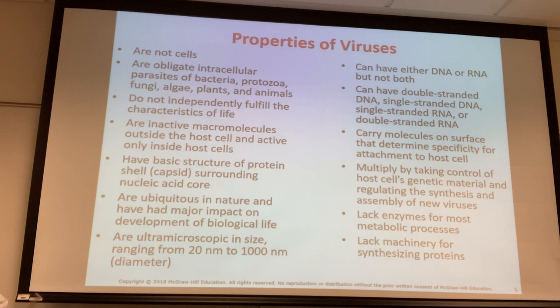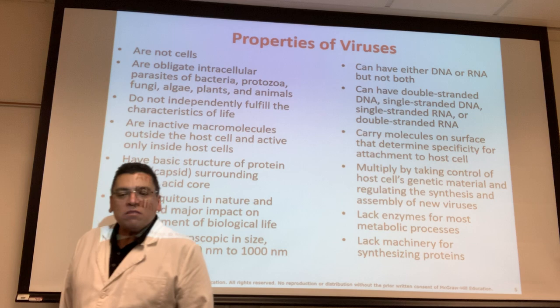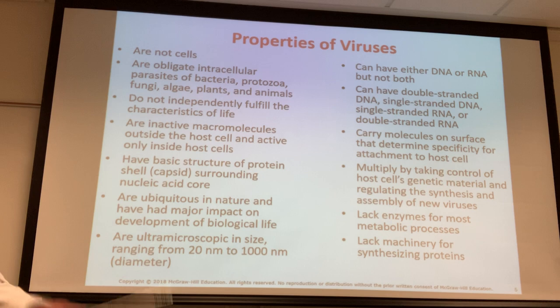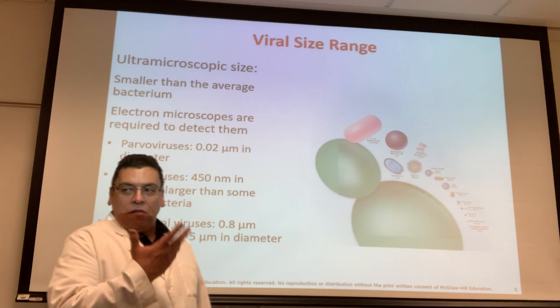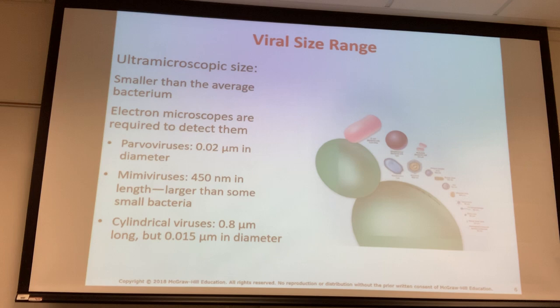We already talked about them being obligate intracellular parasites — they activate within your cells, make copies of themselves, and those copies leave to infect other cells. Acellular means not made up of cells, like viruses. Unicellular means the organism is made up of one cell — like the amoeba, bacteria, or archaea.